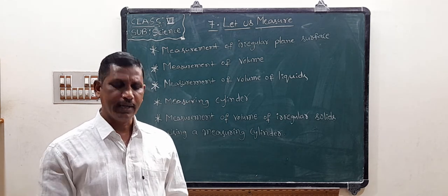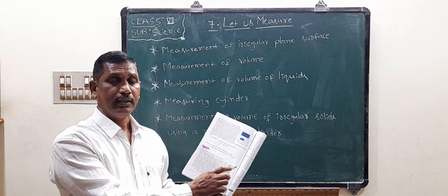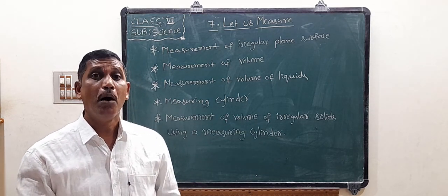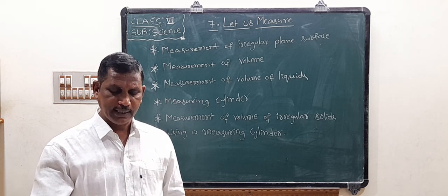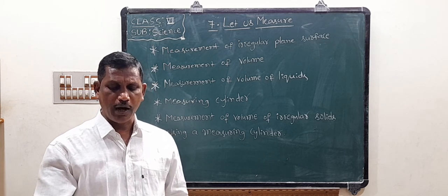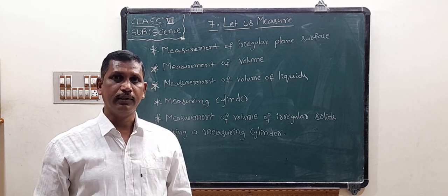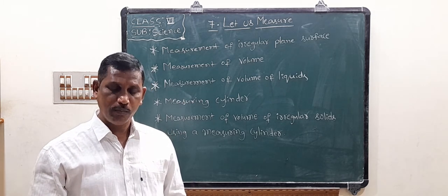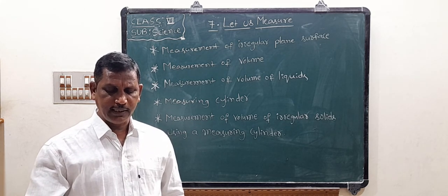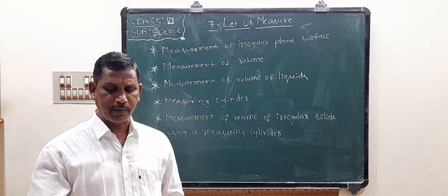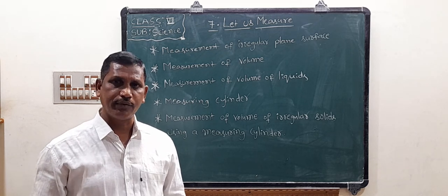Count the number of complete squares inside the boundary of the leaf. Also count those squares inside the boundary which are half or greater than half - we count that as one complete square. Add these two numbers of complete squares. This total number of squares inside the boundary gives the area of the leaf.